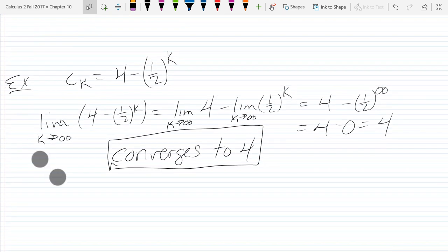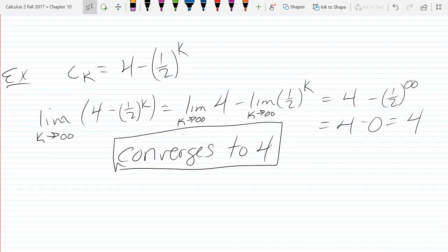So we have to take a limit as k approaches infinity, and it's 4 minus 1 half to the k. So just using the limit rule, we're allowed to split up sums and differences. So it's a limit of the four minus the limit of the other term. The limit of four is four. The limit of the other term is 1 half raised to higher and higher powers. So that gets smaller and smaller, and the limit will be zero. So we got convergence to four.